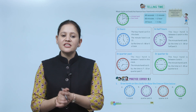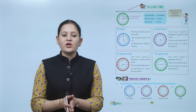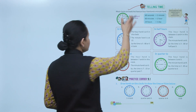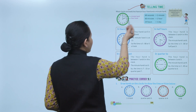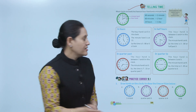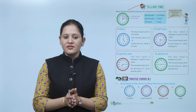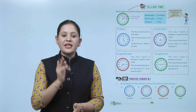Next, telling time. Most clocks and watches have an hour hand and a minute hand. This is a clock — it has two hands: the small hand is the hour hand and the big hand is the minute hand. There is one more hand, that is the second hand.